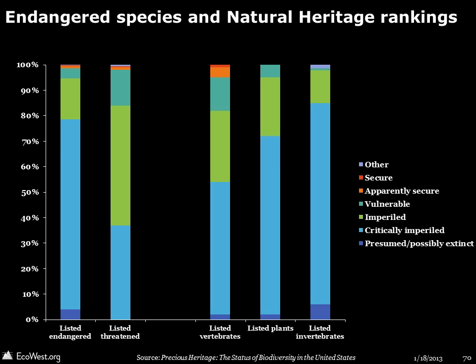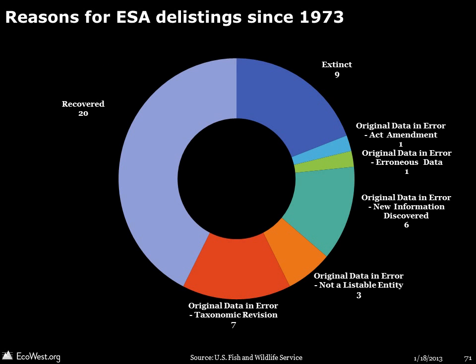We've talked about how species get added to the list, but what about delistings under the ESA? This hasn't happened very often since 1973 — less than 50 times. In 20 cases, a species was declared recovered and no longer in need of ESA protection. 18 times, the government decided that the original listing was in error, often because of taxonomic changes or the discovery of new populations. In 9 cases, a species protected by the ESA has been declared extinct. At a high level, hardly any species that have received federal protection have gone extinct, but less than 2% of listed species have recovered sufficiently to be delisted.